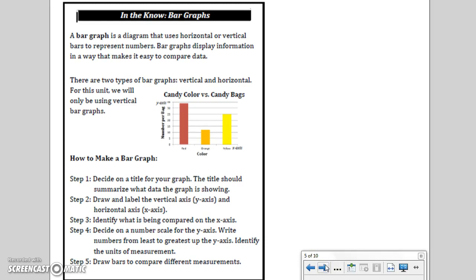In the Know: Bar Graphs. A bar graph is a diagram that uses horizontal or vertical bars to represent numbers. Bar graphs display information in a way that makes it easy to compare data. There are two types of bar graphs: vertical and horizontal. For this unit, we will only be using vertical bar graphs.